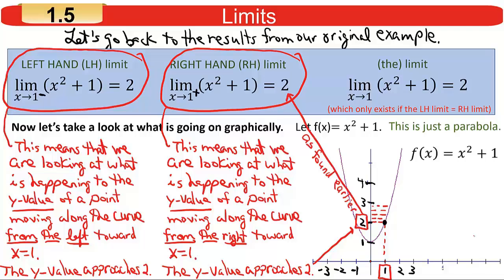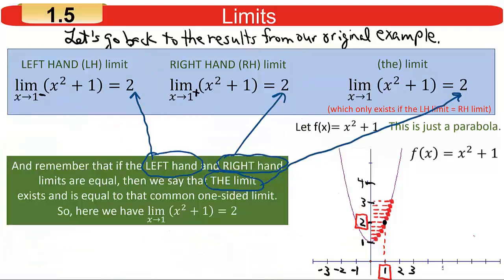Looking at it graphically is just a way of helping you understand what's going on with these limits. If the left- and right-hand limits are equal to each other, you say the limit equals that common value. Here, because the limit of x squared plus 1 as x approaches 1 from the left is 2, and from the right is also 2, then the limit of x squared plus 1 as x approaches 1 is 2 — a graphical way of looking at what we did algebraically.